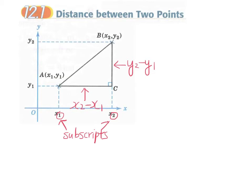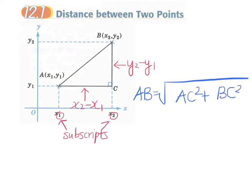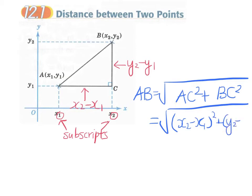Finally, the length of AB — using the Pythagorean theorem — equals the square root of AC squared plus BC squared. AC is x2 minus x1, and BC is y2 minus y1. Therefore this is our distance formula: the square root of the sum of the square of the difference of the x coordinates and the square of the difference of the y coordinates between two points.